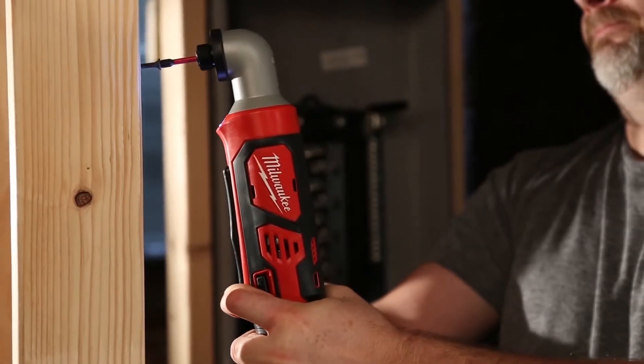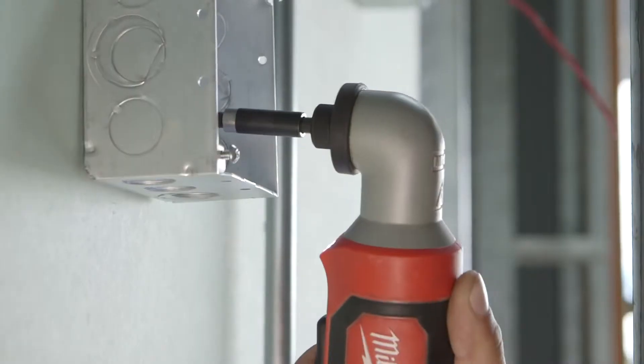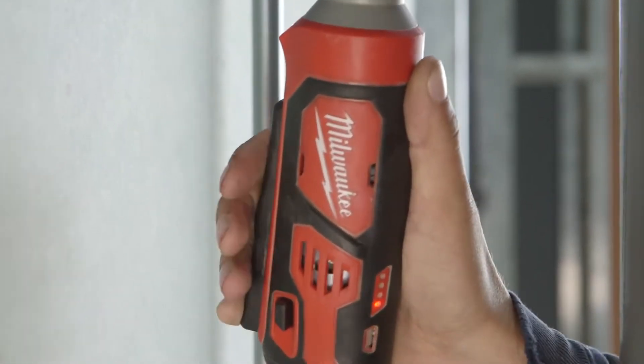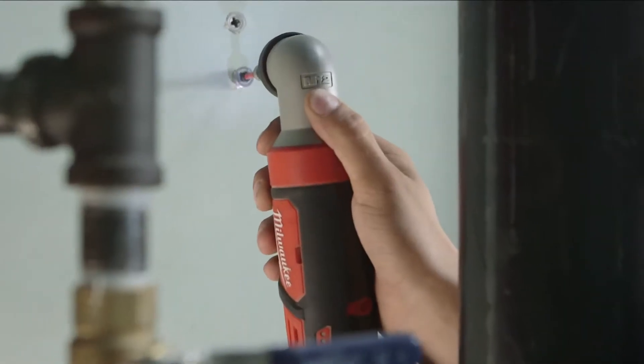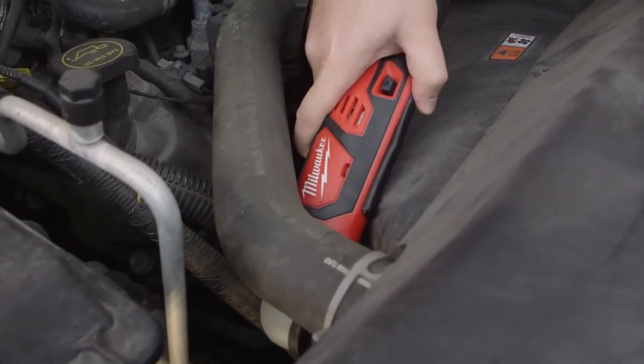A Milwaukee designed impact mechanism delivers fast reactionless fastening. The extended paddle switch makes it easy to control the tool at difficult angles or in small spaces. A 1.4 inch compact head allows for use in tight areas without sacrificing power.